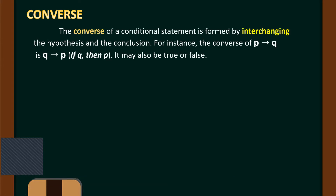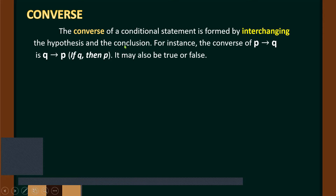For the converse, the converse of a conditional statement is formed by interchanging — pagpapalit — the hypothesis and the conclusion. For instance, the converse of P implies Q is Q implies P: 'If Q, then P.' It may also be true or false.